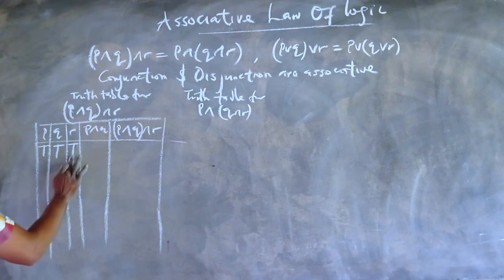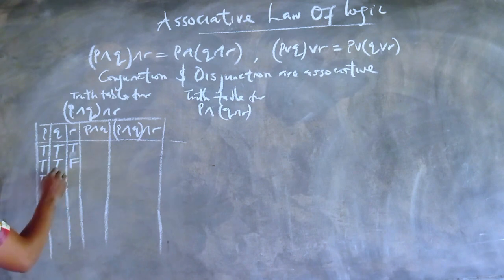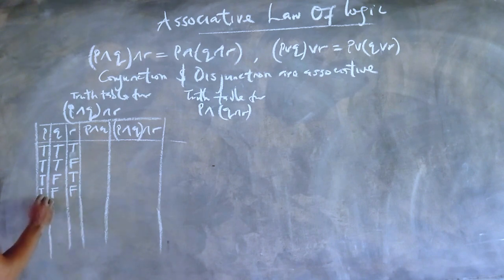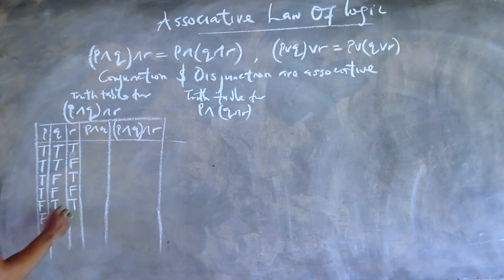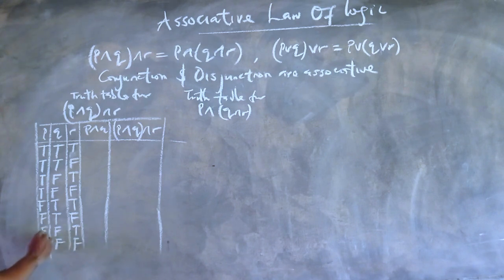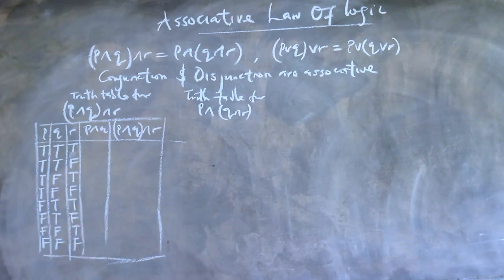The eight conditions are: True, True, True; True, True, False; True, False, True; True, False, False; False, False, True; False, False, False; False, False, True; and False, False, False. These are the eight possible conditions for this compound statement since we have three simple logical statements involved.